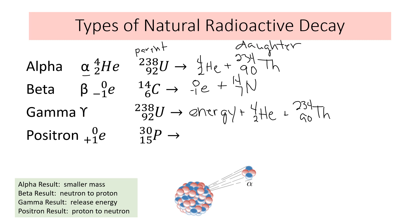The last type is positron decay. It's like the reverse of beta: a 0 +1 electron. It has no mass but a positive charge — it's not a proton because a proton would have mass. It's like matter and antimatter. Looking at the daughter: some number plus 1 is 15, so that's 14 for the bottom, and the top number is 30. Element 14 is silicon. What positron decay does is change a proton into a neutron — the mass stays the same but the proton-neutron ratio changes.